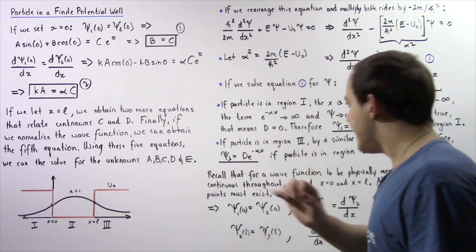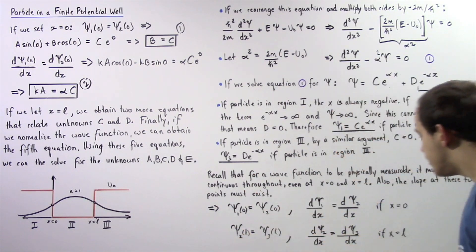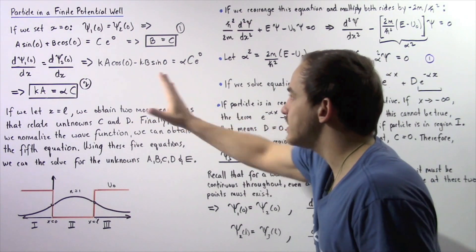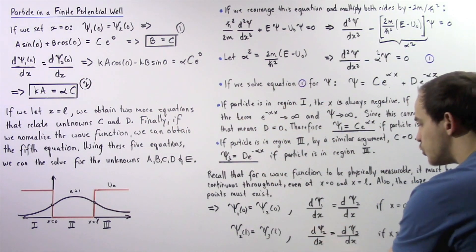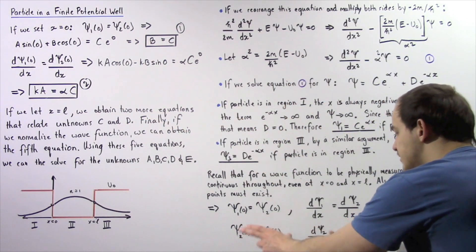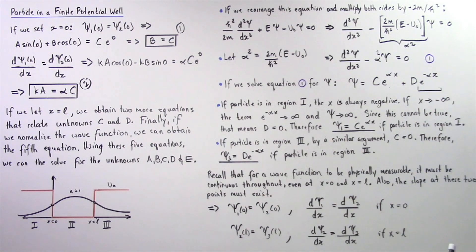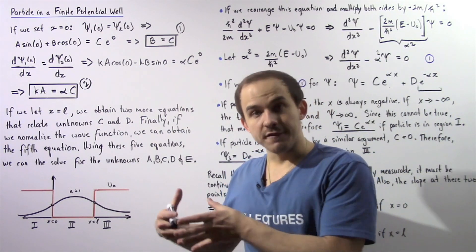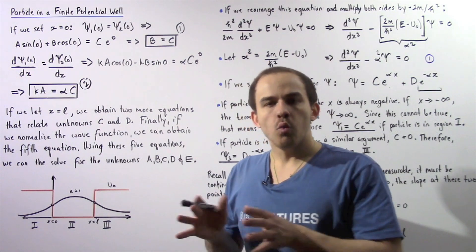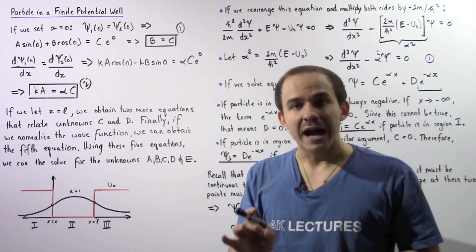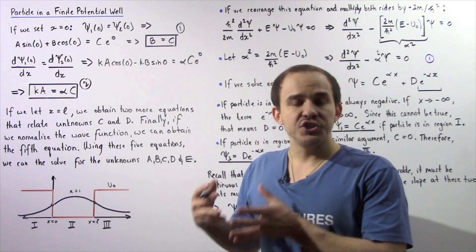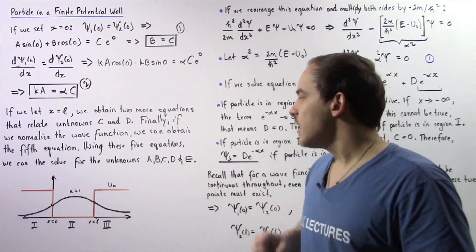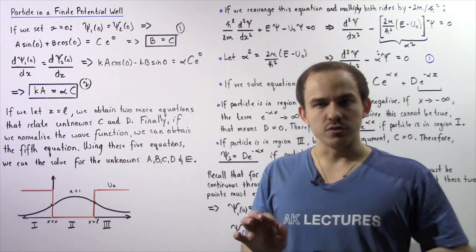Continuing with the same procedure at x equals L gives two more equations. Finally, normalizing the wave function provides a fifth equation. We can then use all five equations to solve for our five unknowns.